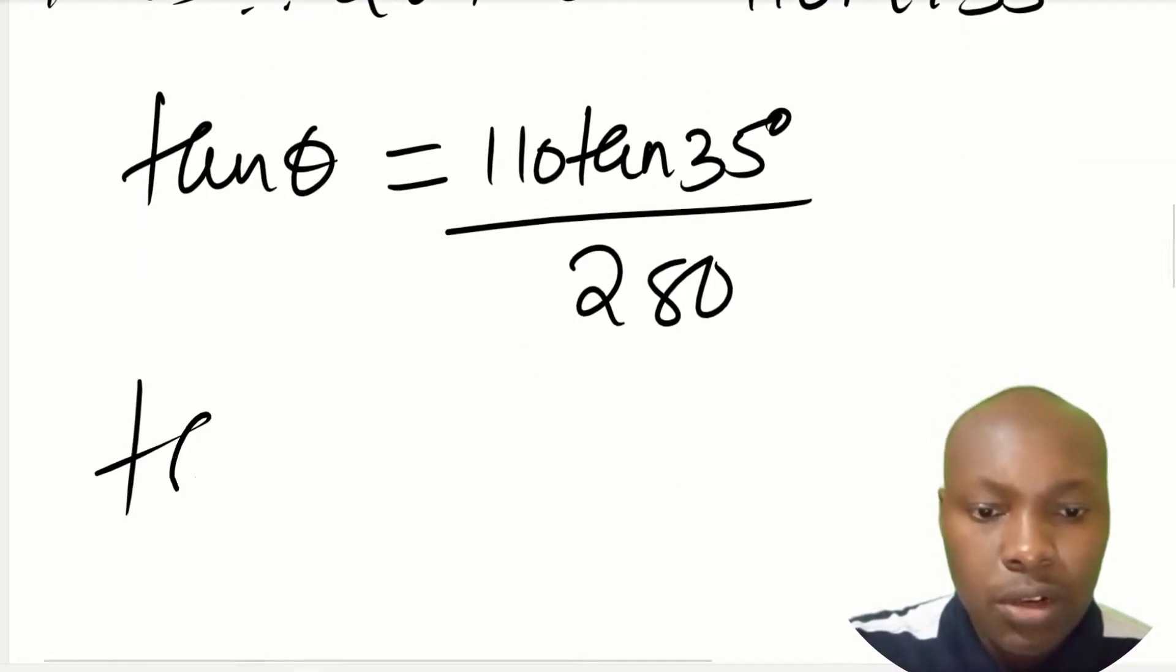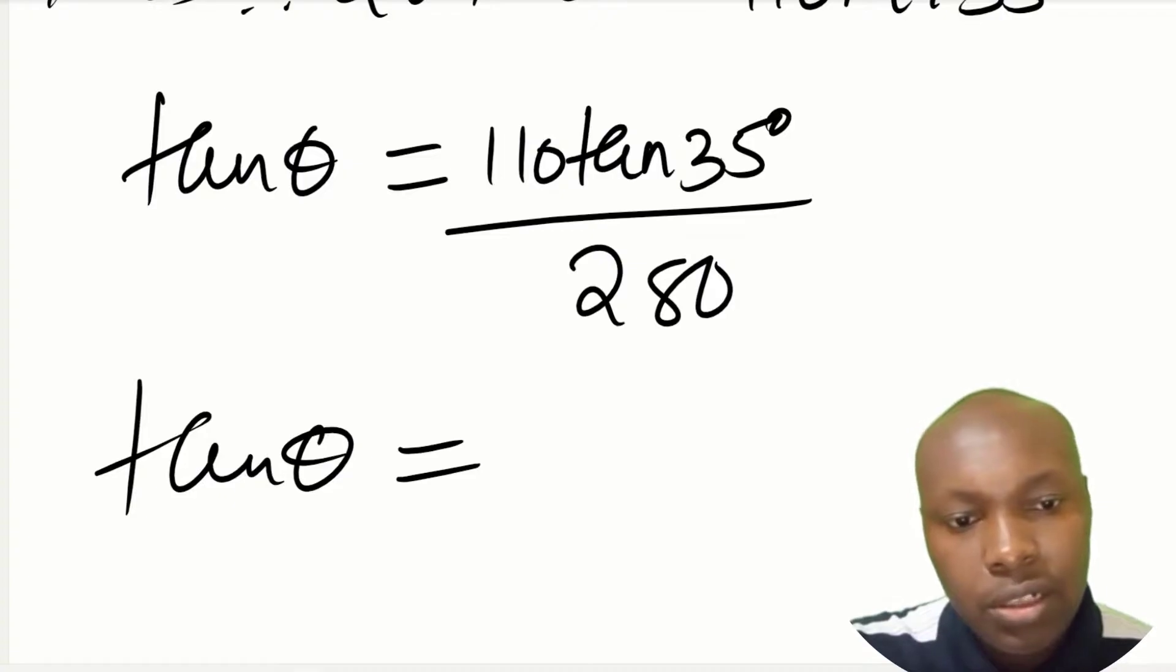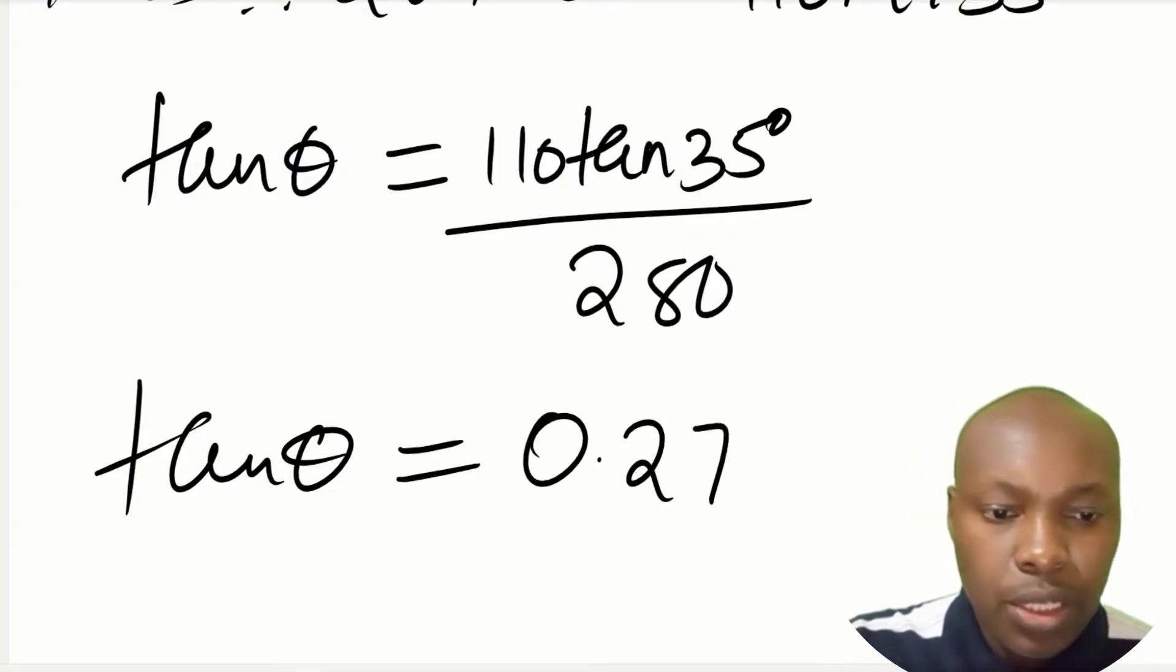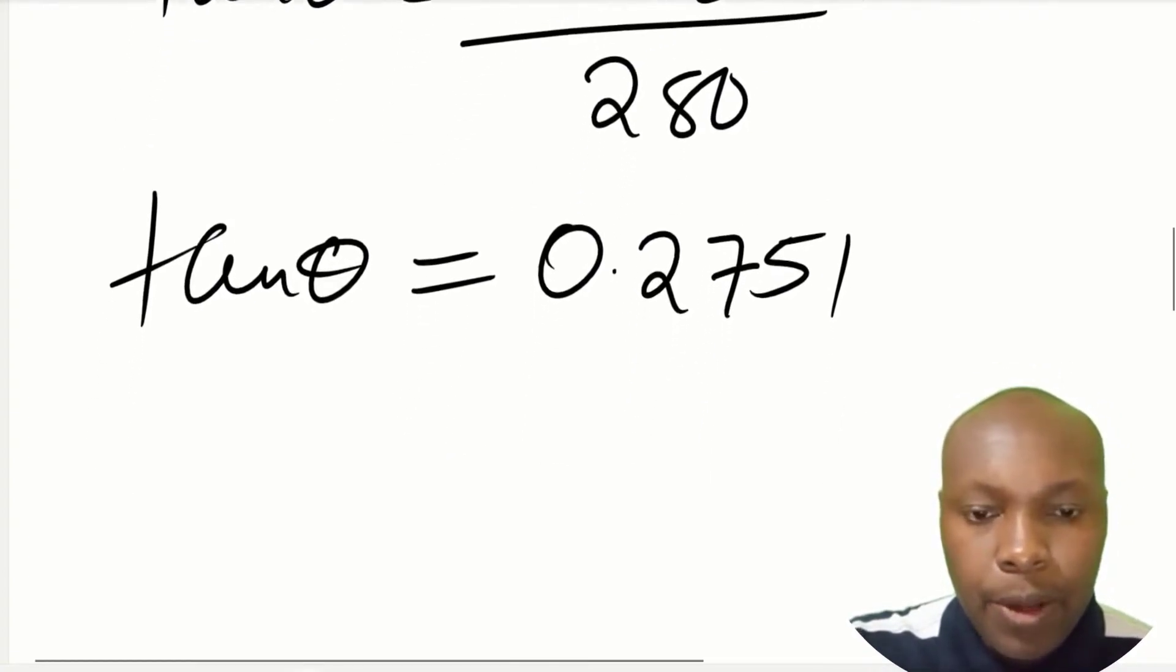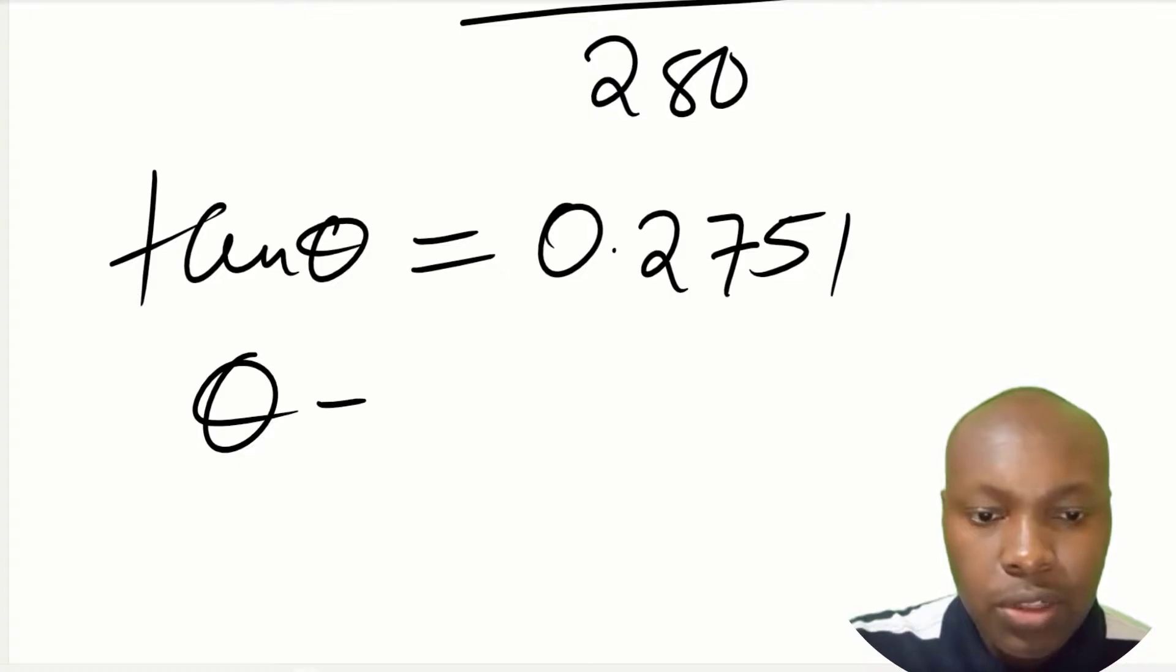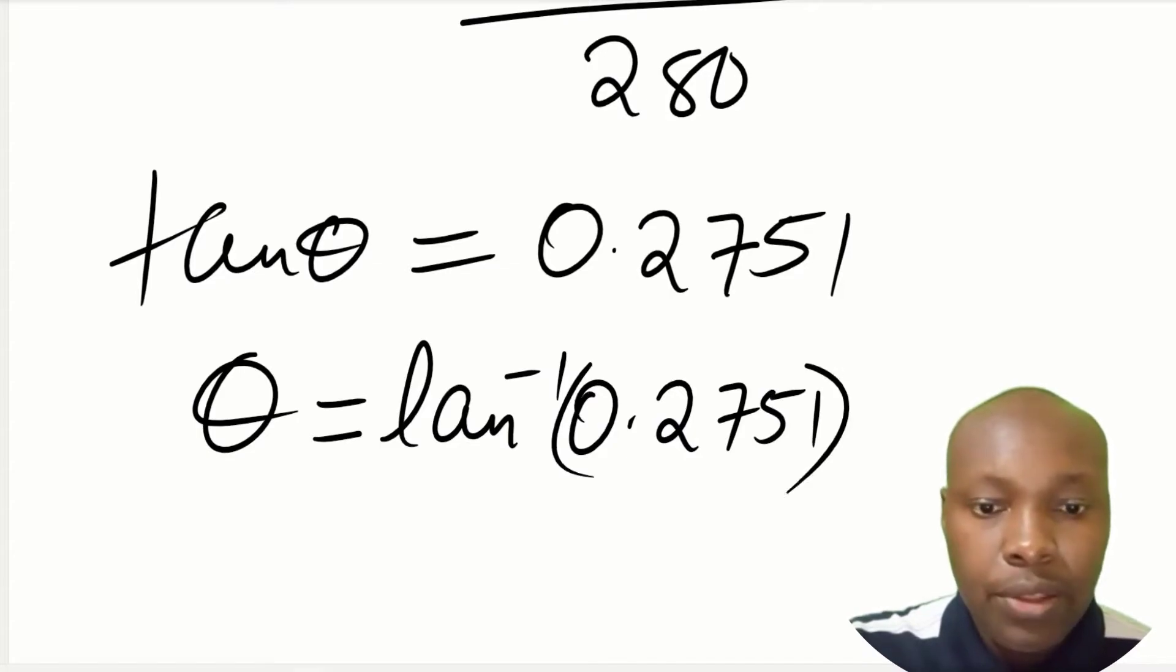So this will give tan of theta. When you divide 110 tan of 35 divided by 280, you shall get 0.2751. And to get now that angle theta, we just get the tan inverse of 0.2751, and this gives theta is 15.38 degrees.